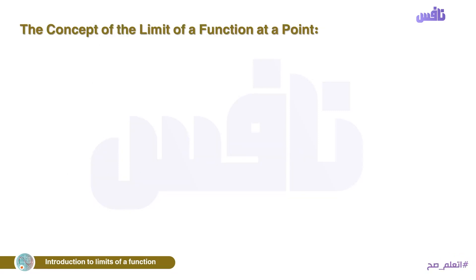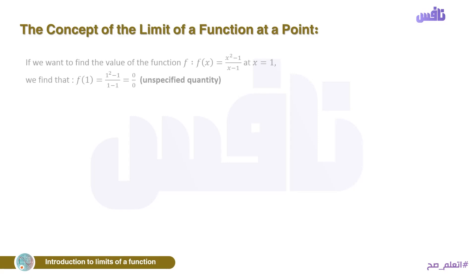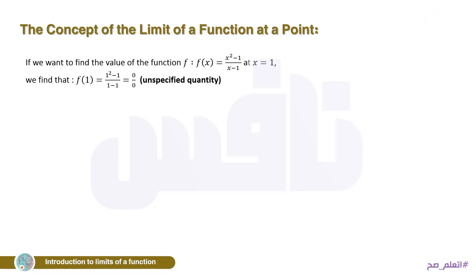Let's talk about the main topic in a clear way: the concept of the limit of a function at a point. If we want to find the value of the function f(x) = (x² − 1)/(x − 1) at x = 1, we do direct substitution: f(1) gives (1² − 1)/(1 − 1) = 0/0. This is an indeterminate quantity — we cannot determine the value of the function at x = 1.